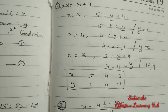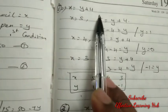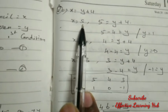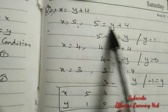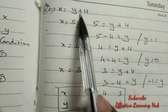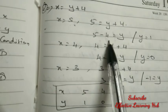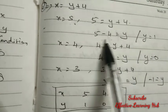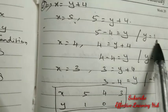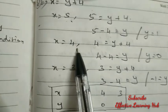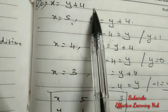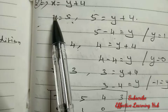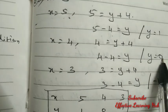Now second equation: x equal to y plus 4. Take any 3 values. For x equal to 5: 5 equal to y plus 4, so 5 minus 4 equal to y, y equal to 1. For x equal to 4: 4 equal to y plus 4, so 4 minus 4 equal to y, y equal to 0.